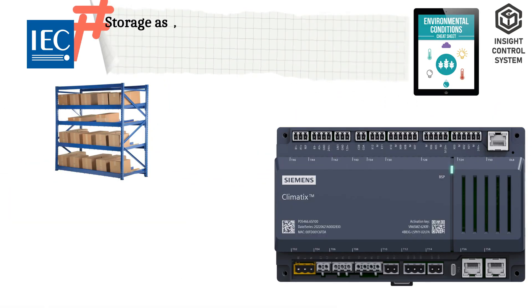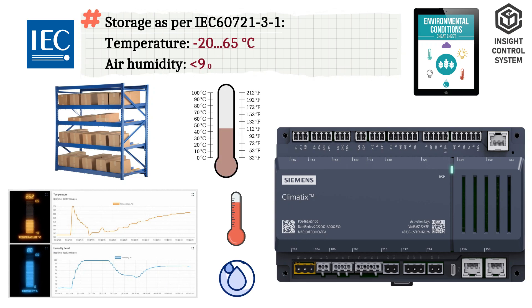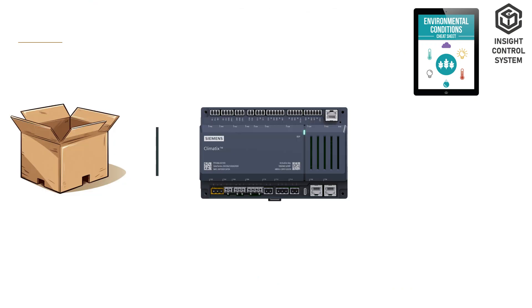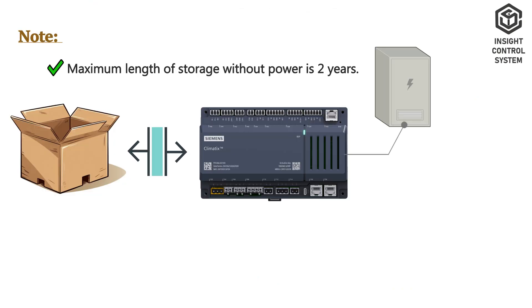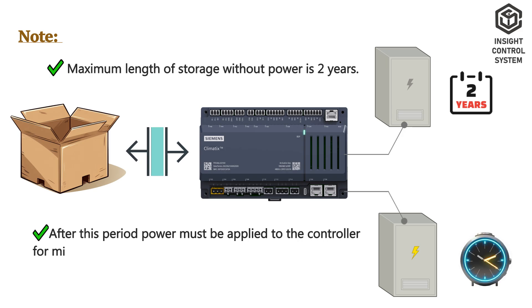Environmental compatibility — climatic ambient conditions in storage: temperature minus 20 to 65 degrees Celsius, air humidity less than 90% RH non-condensing. Note: maximum length of storage without power is 2 years; after this period, power must be applied to the controller for a minimum of 4 hours.